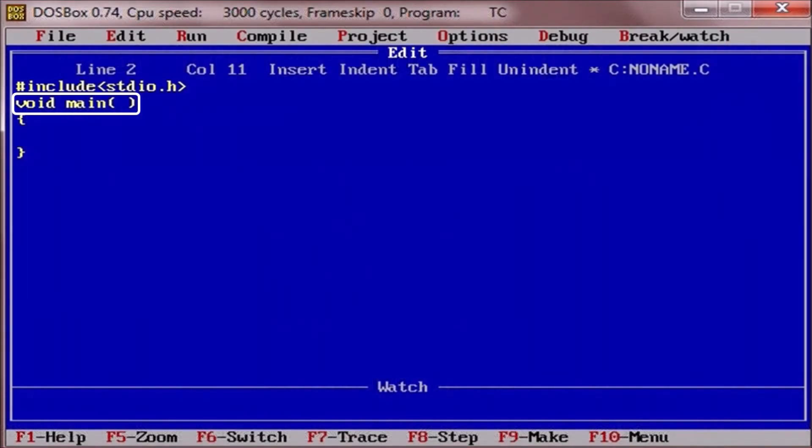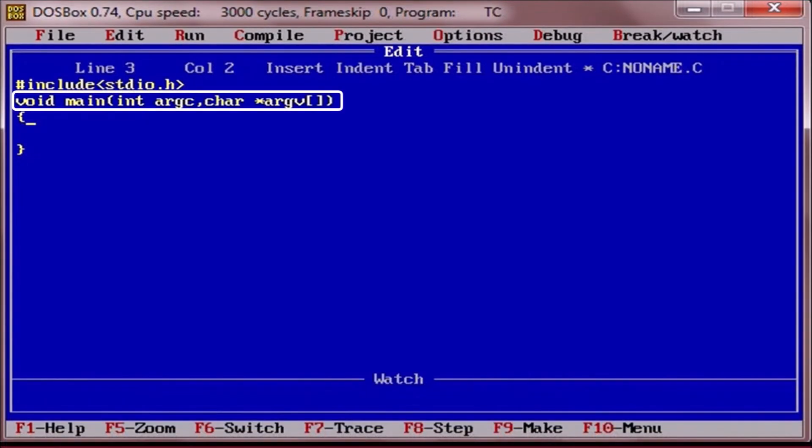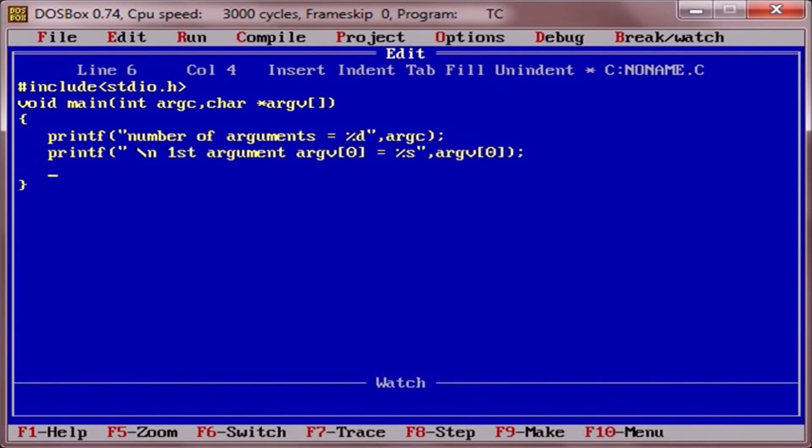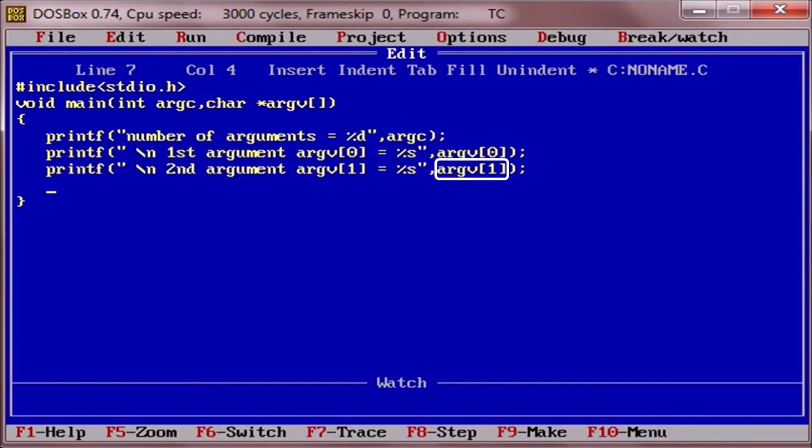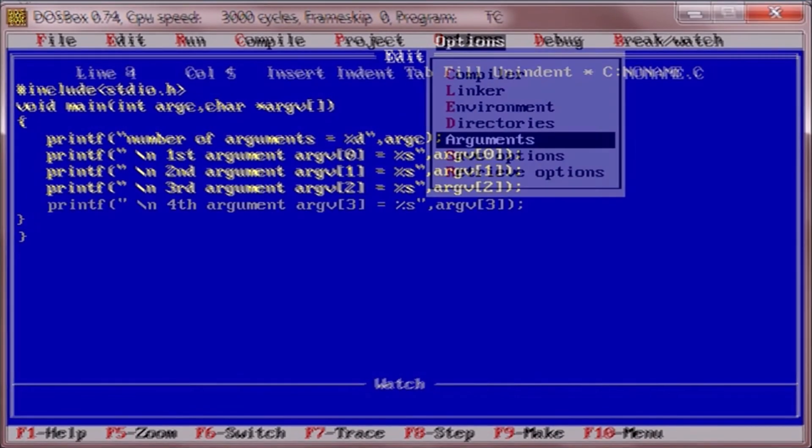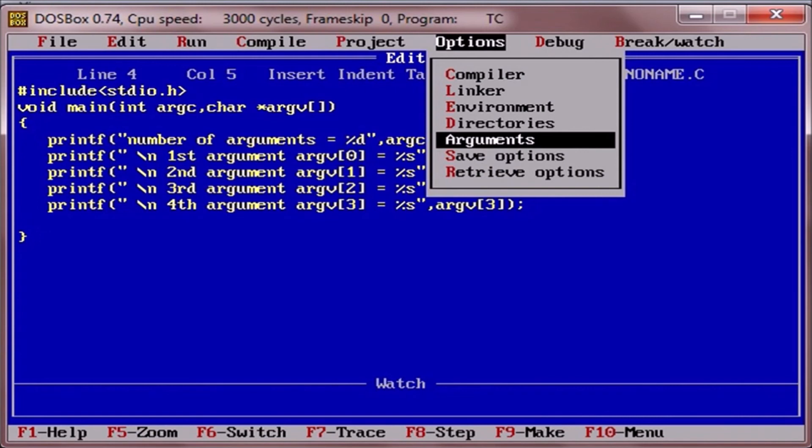A sample program and its execution. Here we go. Write main method, then write two parameters as int argc and char asterisk argv. Using printf, it prints argument count using argc, printing first argument as string argv of 0, then argv of 1, and then argv of 2, and then argv of 3.